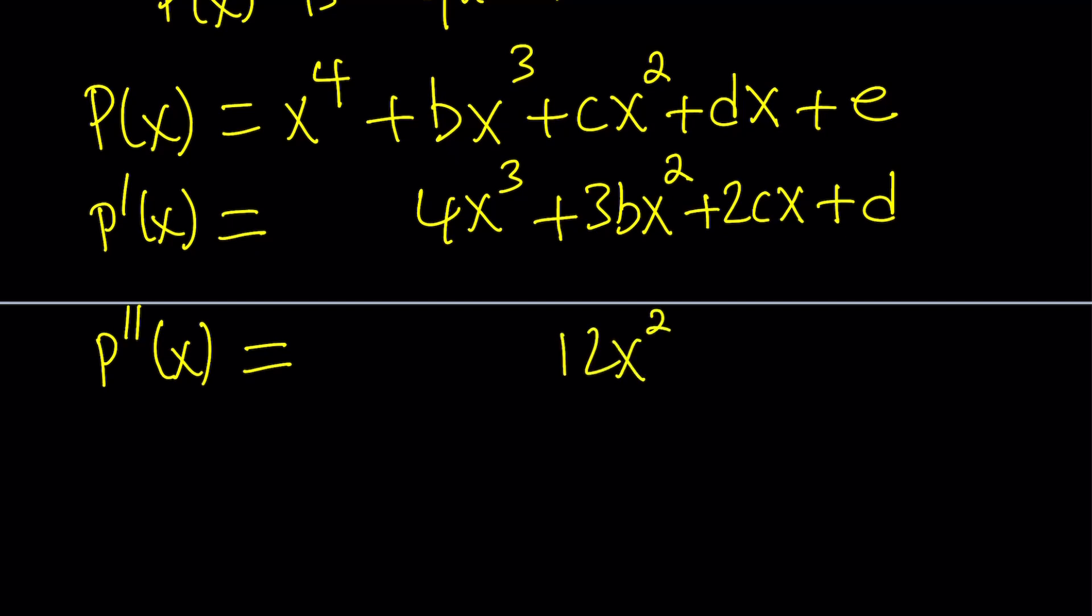So that's going to become 12 X squared. I'm going to put it down here and then it's going to be the derivative of three B X squared is going to be six B because you're going to bring down the two and multiply by three B, six B X. And then derivative of two C X is just the coefficient of X, which is two C.